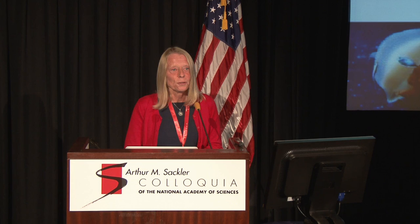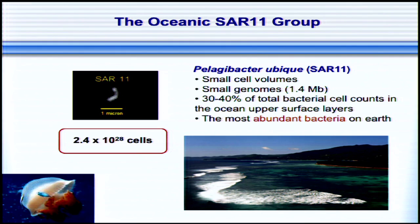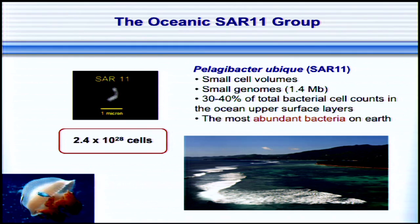The oceans were particularly attractive, since oxygen started to rise in the oceans. What is present in the upper surface waters of the oceans? Primarily bacteria of the SAR11 group. They have very small genomes, like the rickettsias, a little more than one megabase pair, small cell volumes, and they are extremely abundant — 30 to 40 percent of the upper surface waters consist of SAR11 bacteria. Altogether, it's been estimated they represent about 10 to the 28th cells in the oceans, probably the most abundant bacteria on Earth.